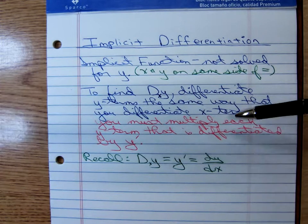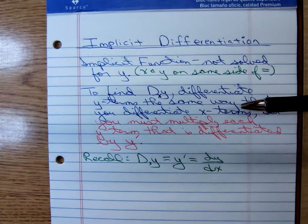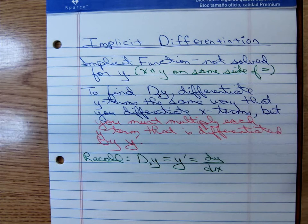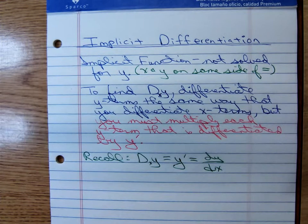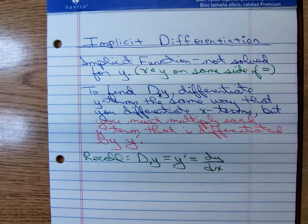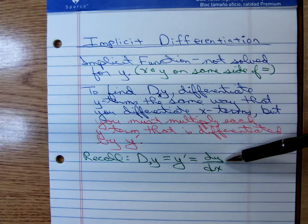y is representing some unknown function. By the chain rule, you differentiate the outer function but then you have to multiply by the derivative of the inner function. You differentiate the term containing y as usual, as if it were an x, but then you multiply by the derivative of the inside function. Since we don't know what the derivative of y is, I prefer y prime notation; if you view an example on MyMathLab, you'll probably see dy/dx.